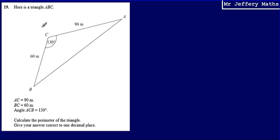This is question 19. Here I'm given a triangle ABC, and I'm given the length BC as 60, CA as 90, and the angle here 130 degrees. What I'm asked to do is calculate the perimeter of the triangle, and I'm asked to give your answer correct to one decimal place.